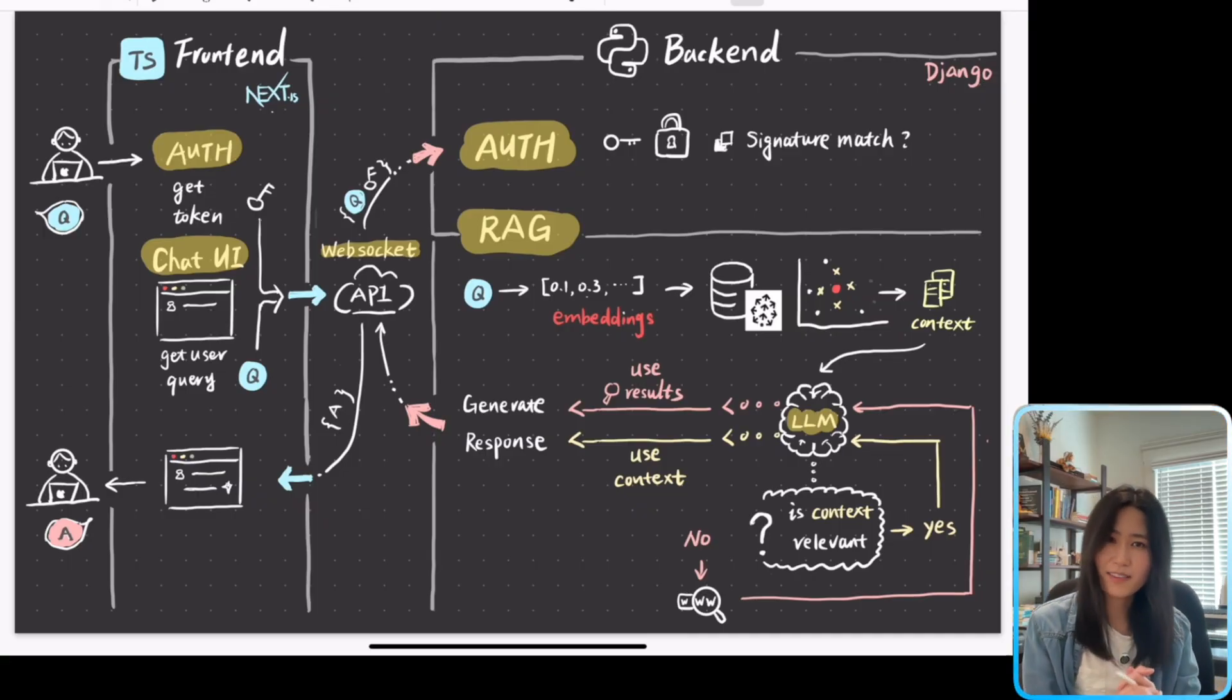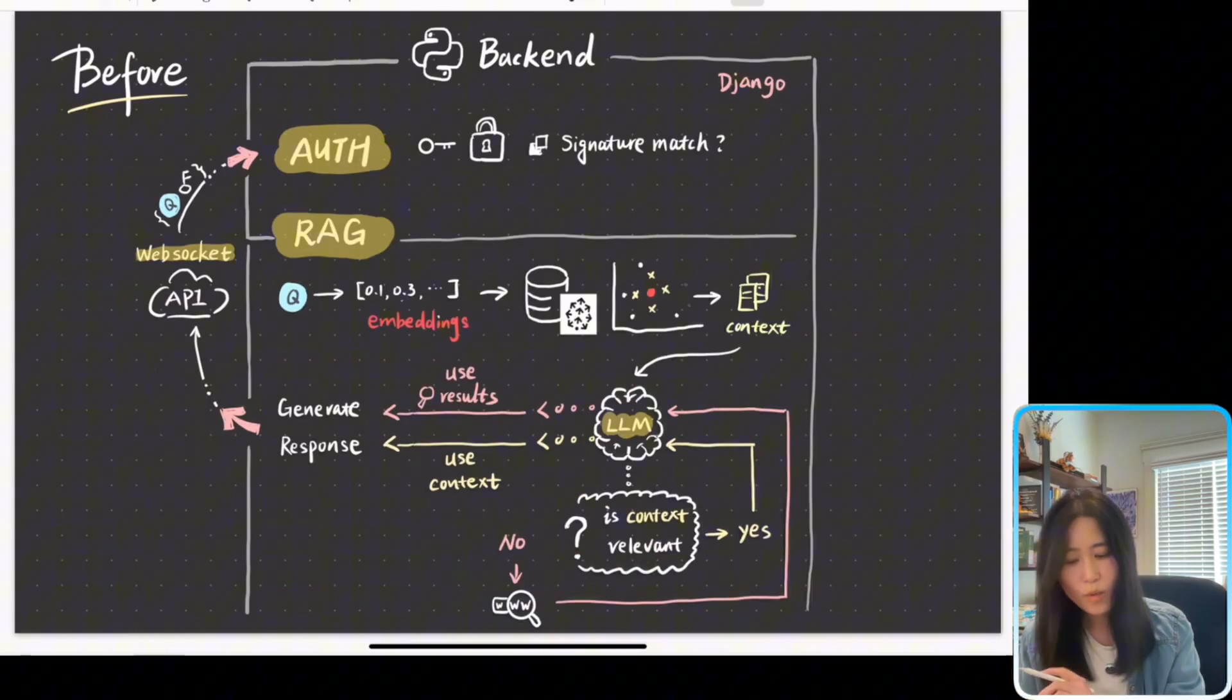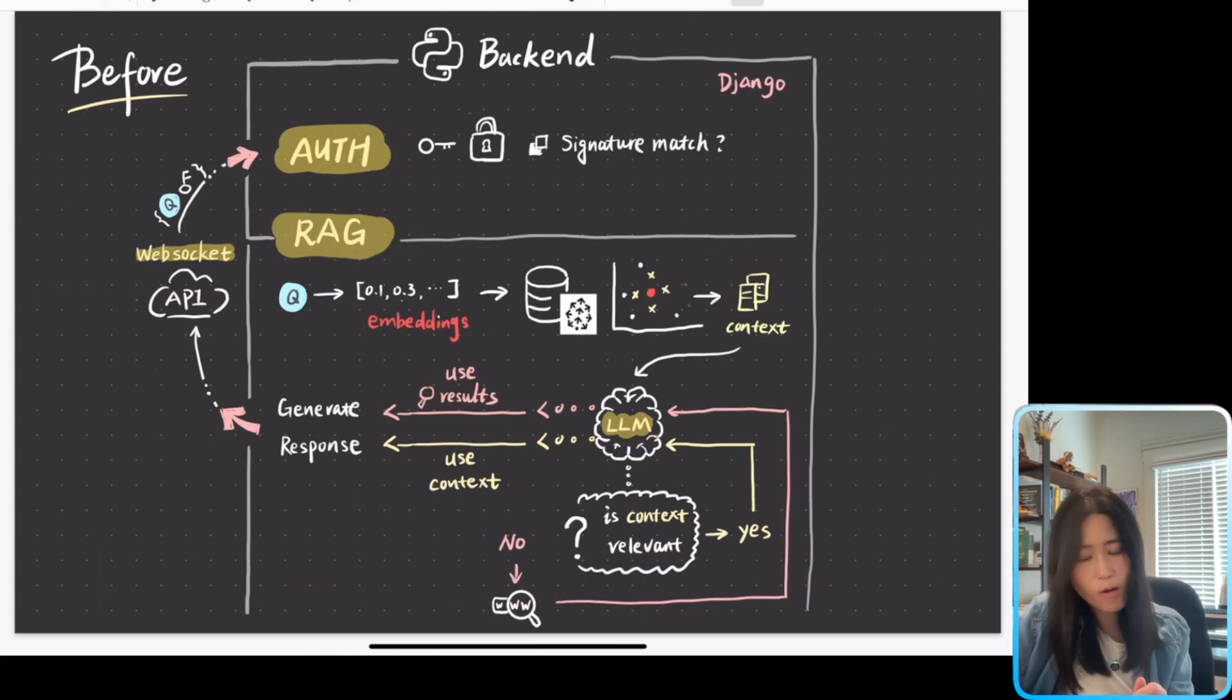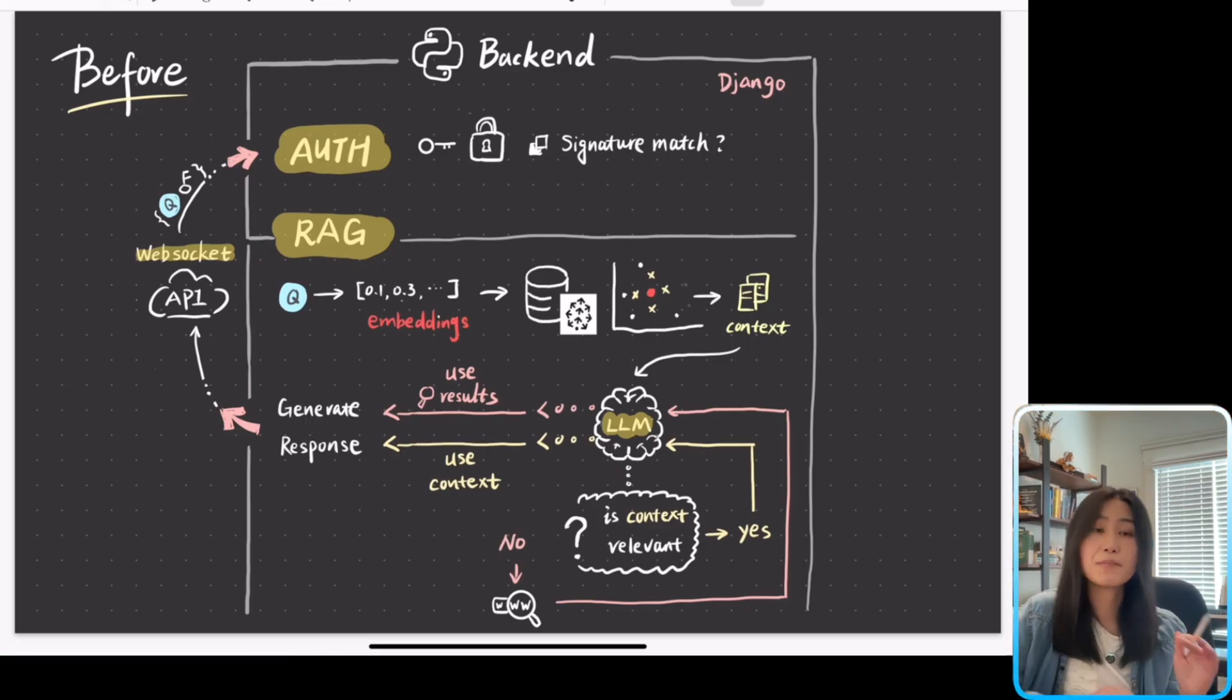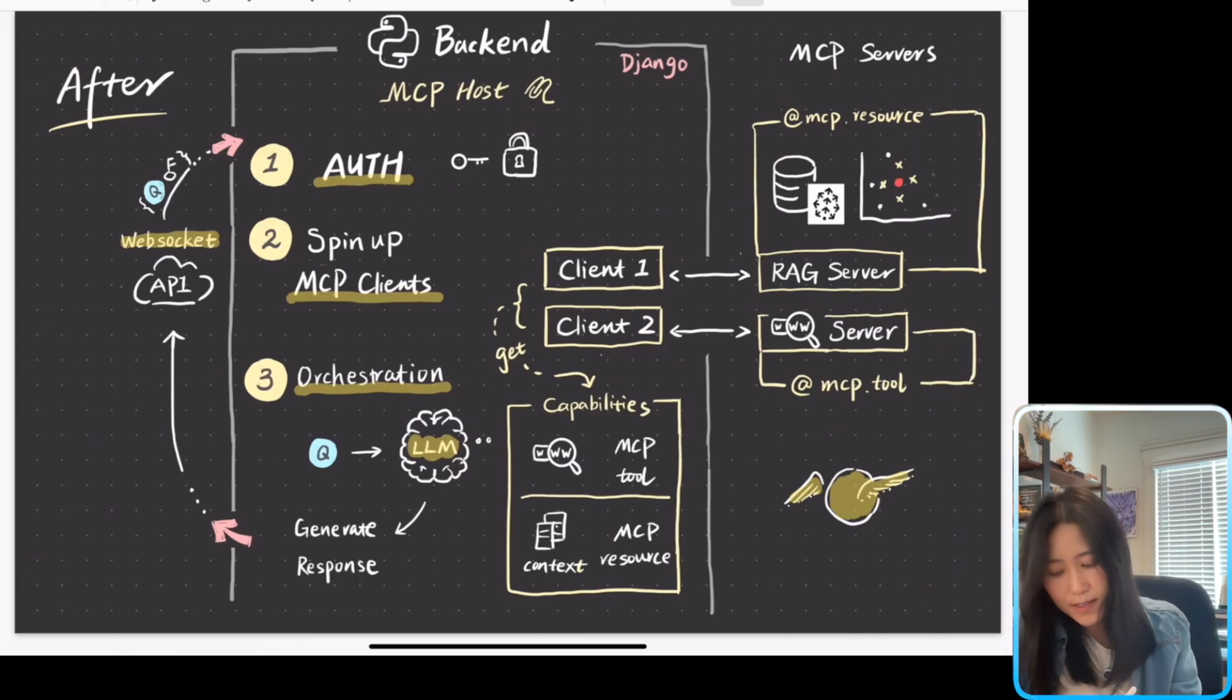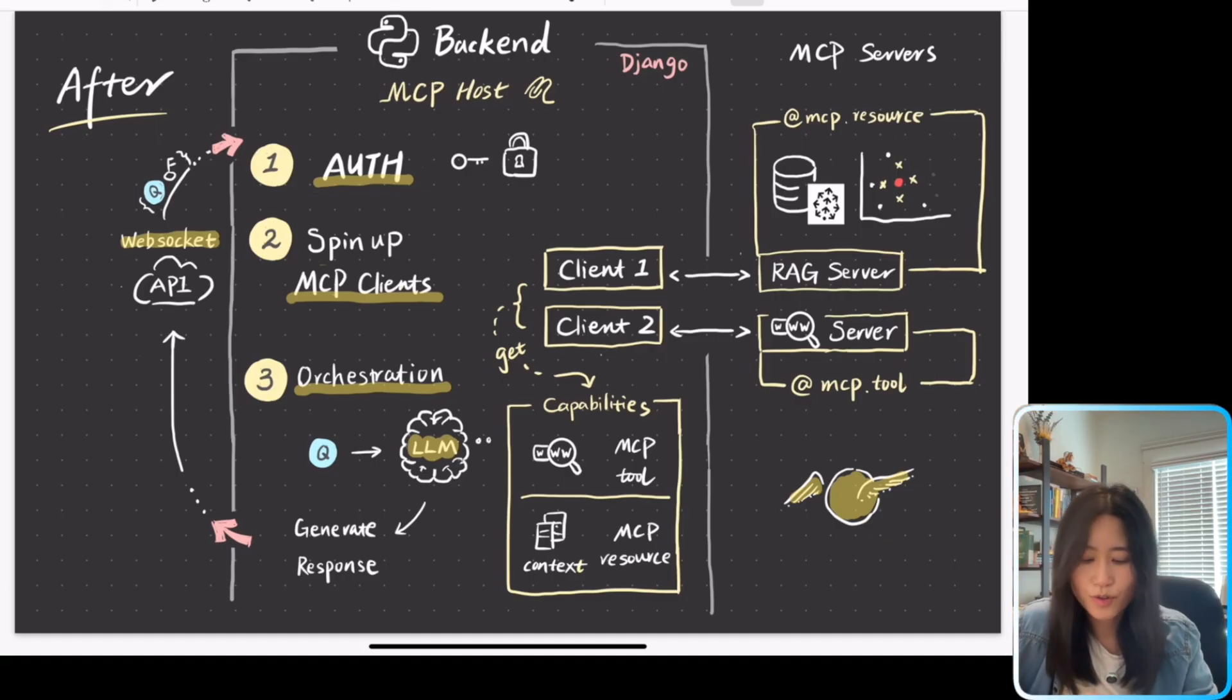That means we are going to transform our backend architecture. So remember this before architecture, it get the user query and token, does the authentication, has the RAG component. And after transformation to become MCP compatible, it's going to look like this. So the step one is still the same. We're still going to do the user authentication.